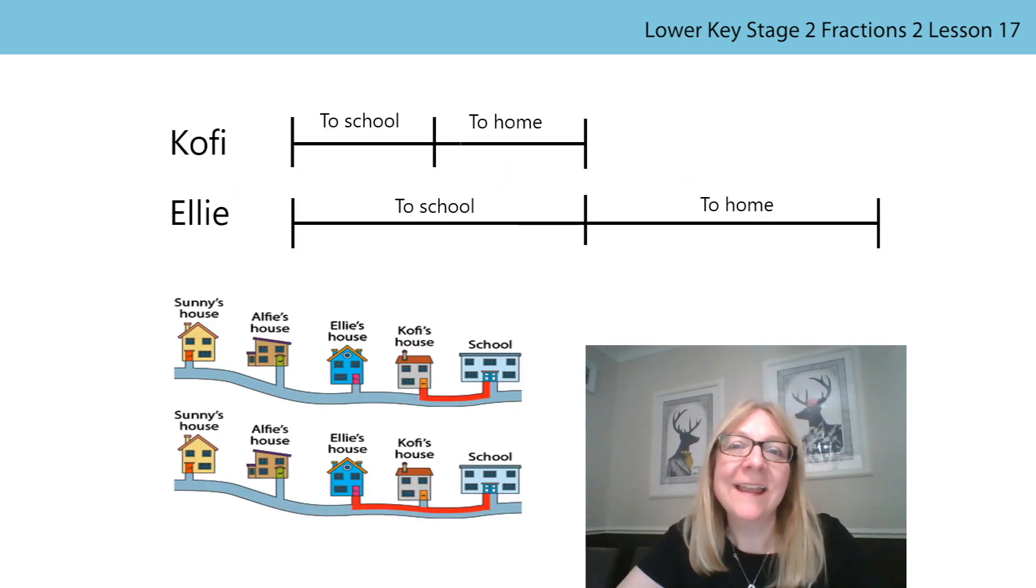How did you get on? This is how I represented it. Kofi's journey to school is shorter than Ellie's journey to school and so I have made Kofi's journey to school a shorter line. For each of them their journey to school represents a half of the total distance and the journey to home represents the other half of the total distance. You can see from the whole lines that Ellie walked further to and from school each day.